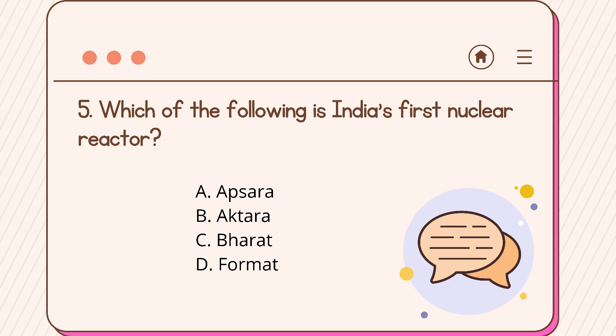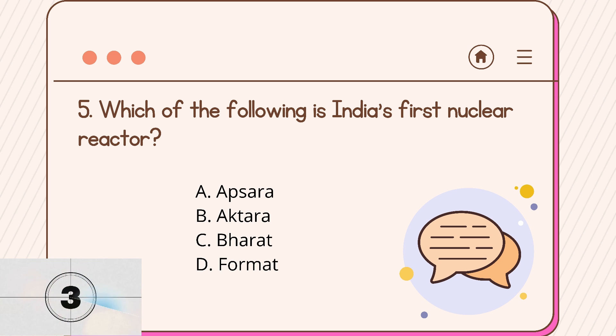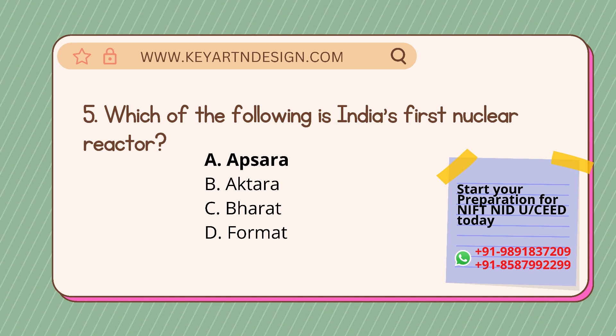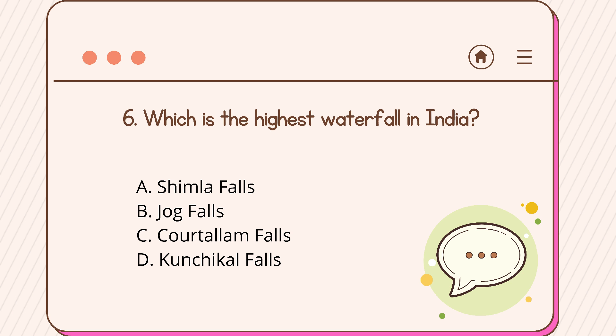Question number five: which of the following is India's first nuclear reactor? Option A: Apsara, Option B: Akhtara, Option C: Bharat, Option D: Format. The correct answer is Option A, Apsara.